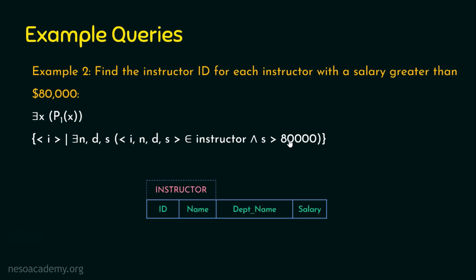Comparing example one and example two, it seems similar to tuple relational calculus. But there is a key difference. In tuple relational calculus, there-exists x binds to a relation. In domain relational calculus these are domain variables — they are unconstrained until the sub-formula. The sub-formula 'i, n, d, s belongs to instructor' constrains the domain variables to that relation.